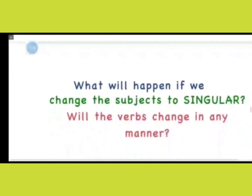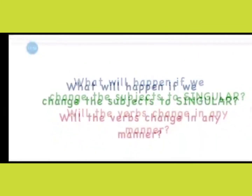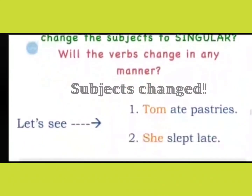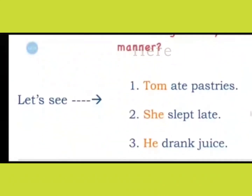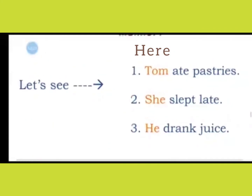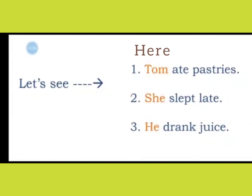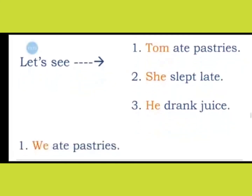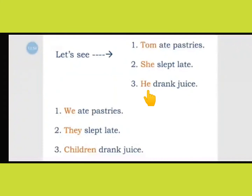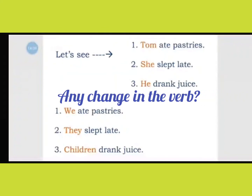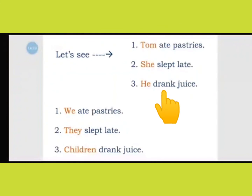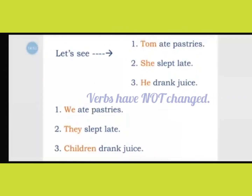Now what will happen if we change the subjects to singular? Will the verbs change in any manner? I have changed the subject of the same sentences. Now we have: Tom ate pastries, she slept late, and he drank juice. These are all singular subjects. If we compare them, on the top side the subjects are singular — Tom, she, he — whereas in the bottom we have we, they and children, which are plural subjects. But do you notice any change in the verb? In the top you see ate, slept, drank, and similarly in the bottom you have the same verbs — ate, slept and drank. The verbs have not changed at all, even though we changed the subjects.